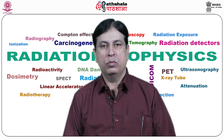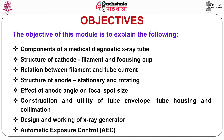The objective of this module is to explain the following: Number 1, components of a medical diagnostic X-ray tube; structure of cathode with special reference to filament and focusing cup; the relation between filament and tube current; structure of anode — both stationary and rotating; effect of anode angle on focal spot size; construction and utility of tube envelope, tube housing and collimation; design and working of X-ray generator; and Automatic Exposure Control, that is AEC.